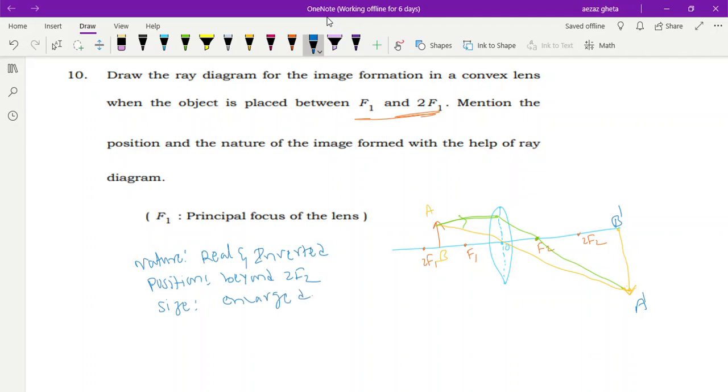What about the position? It is beyond 2F2. What about the size? Enlarged. If you keep your object at 2F1, image will be at 2F2. If you keep your object between 2F1 and F1, which is this case, your image will be beyond 2F2. If you keep your object at F1, then your image will be at infinity. Hope you all got it, this is all cleared.